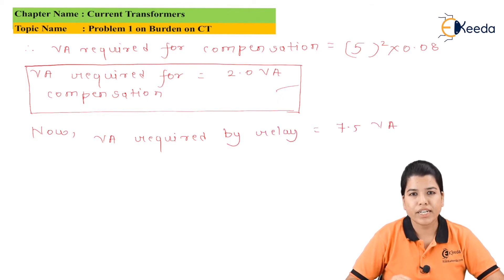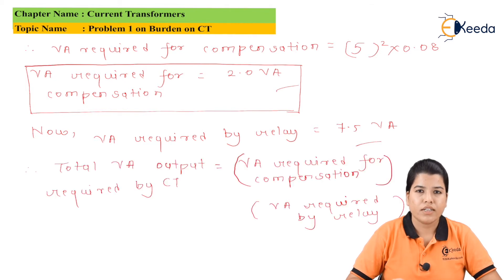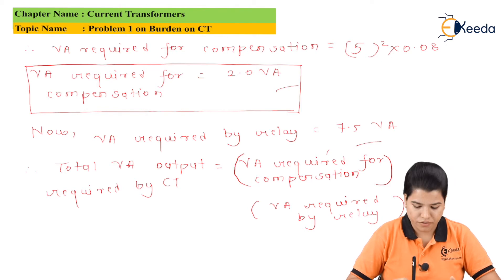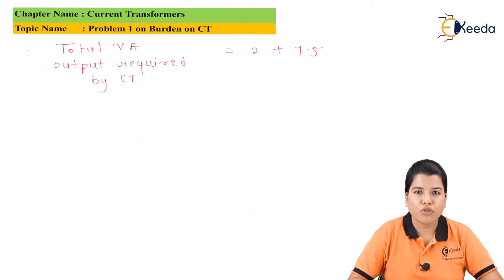Now in given data it is mentioned that VA required by the relay is equal to 7.5 VA. Hence the VA required for the CT can be calculated as: VA required for compensation plus VA required for relay. So substituting the value in this equation we get total VA output required by CT is equal to 2 plus 7.5, which equals 9.5 VA.